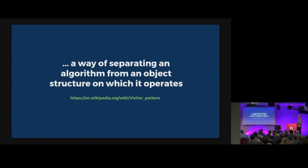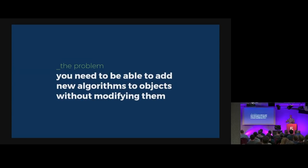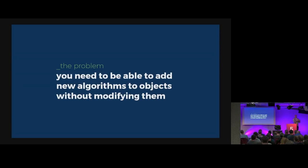The visitor pattern is a way of separating an algorithm from an object structure on which it operates. You need to add new algorithms to an object without modifying them. For example, you have a shape and you need to calculate its area — I'll add a getArea method. Then it would be cool to also tell you x and y coordinates, and maybe figure out the bounding rectangle for multiple shapes. All of these are new things that come along the way. Often we go back and change our objects, adding new functionality to support these new calculations. The visitor pattern basically says: no, don't change your object — I'll give you a generic way of adding new features without having to change the object.